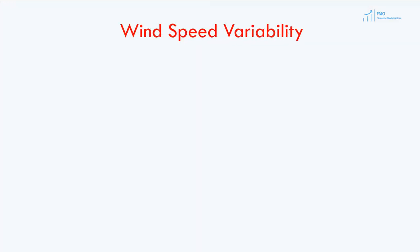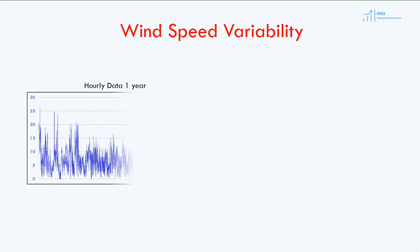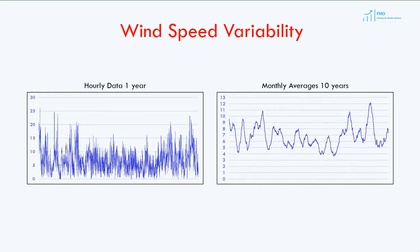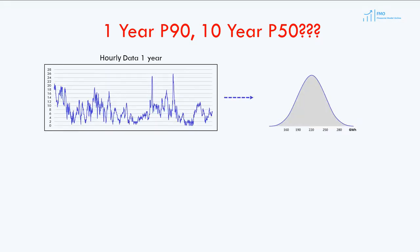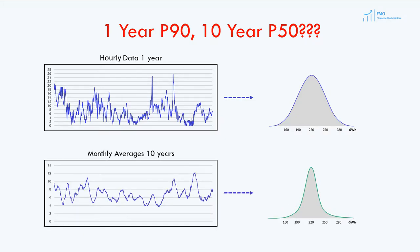Now, let's consider wind speed variability for hourly data over a one-year period versus average monthly data over a 10-year period. Wind speed data for the 10-year period is less volatile compared to the hourly data for one year. On the graph with hourly data, wind speed oscillates between 0 and 26, while on the graph with monthly data, wind speed fluctuates between 4 and 12 meters per second. The 1-year and 10-year data each generate their own probabilistic distributions and probabilities of exceedance. The 1-year data generates a bell curve that is wide, reflecting wide fluctuation in wind speed, while the 10-year data generates a narrower bell curve.